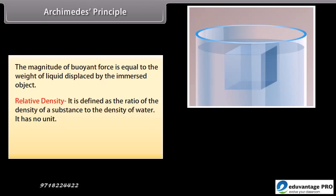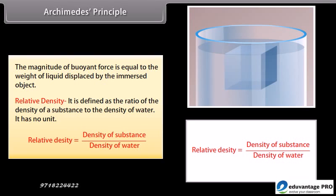Relative Density: Relative density is defined as the ratio of the density of a substance to the density of water. It has no unit. Relative density = density of substance / density of water.